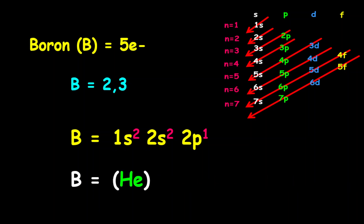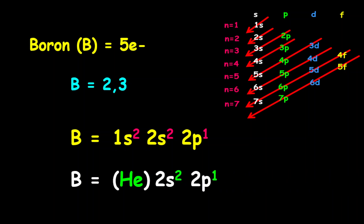For the shorthand electron configuration, it is given as helium, representing the 1s2, then followed by 2s2, then 2p1.